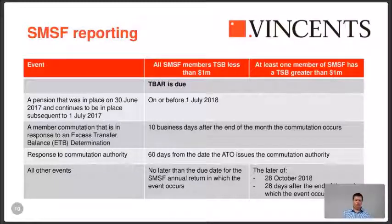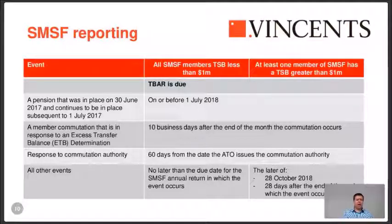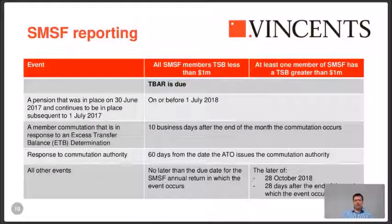It's a busy time of year, but you have to turn your mind to this quickly. We've been planning and resourcing around this since October last year to get it right. If there's a commutation because of a notice from the commissioner — an excess transfer balance notice — it's 10 days after month end, exactly like an APRA fund. If you receive a commutation authority from the ATO, you've got 60 days from the date it's issued to act on it and lodge your TBAR.